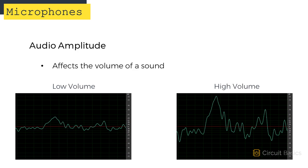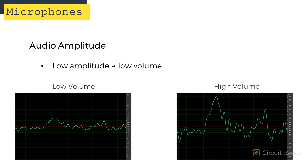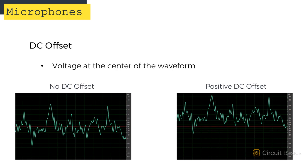The volume, or loudness of a sound, is directly related to the amplitude of the peaks. A higher amplitude audio signal creates a higher volume sound, and a lower amplitude audio signal creates a lower volume sound. Another factor called DC offset determines the voltage at the waveform's center. The audio signal swings up and down around the DC offset voltage.